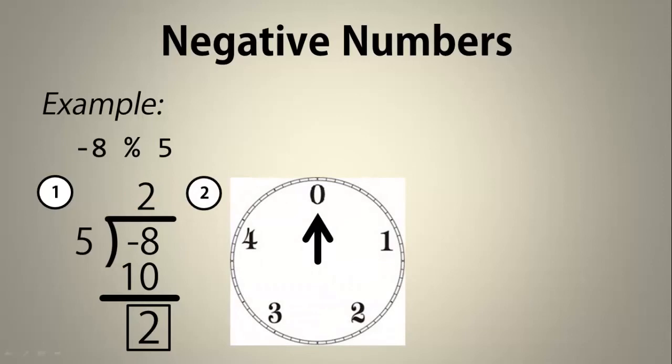We can also use the clock method to solve the problem. For negative numbers, we count counterclockwise, so negative 1, negative 2, negative 3, negative 4, negative 5, negative 6, negative 7, negative 8. And so again, our answer is 2.